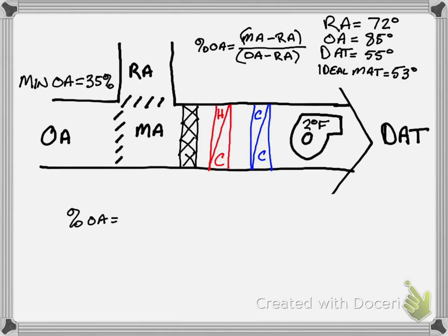Now our ideal mixed air temperature has not changed. We are still trying to make 53, but now we have a new equation to plug in. We have 53 minus 72 over 85 minus 72, which comes to be negative 19 over 13.